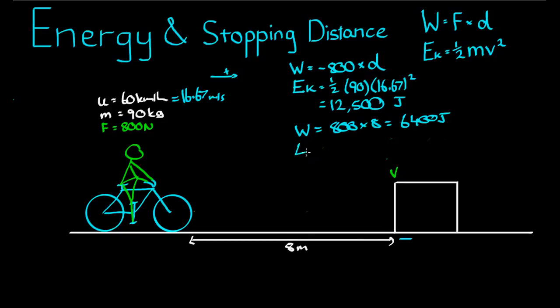So the final kinetic energy is going to equal 12,500, take away 6,400, which is equal to 6,100 joules. So at the moment of impact, the bike had 6,100 joules worth of kinetic energy.